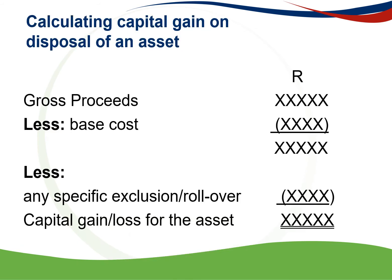This is the framework for the calculation of the capital gain on the disposal of an asset. You will have your gross proceeds. From that you deduct your base cost, and then further you deduct any specific exclusions or rollovers, and that will give you the capital gain or loss for the asset.